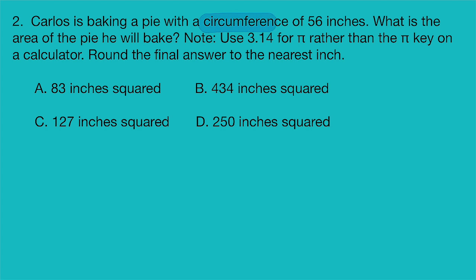Okay, so they give us the circumference. Circumference here is 56 inches. And they want to know what is the area of the pie, or in this case, the area of the circle. So we know we're going to be using that area equation again. Area equals pi r squared. But they also give us the circumference. That was our given value here. And the equation for circumference is pi times the diameter.